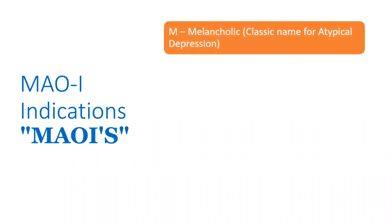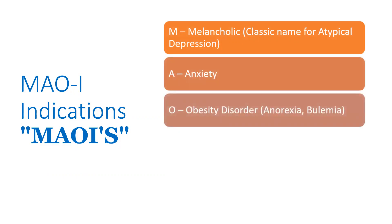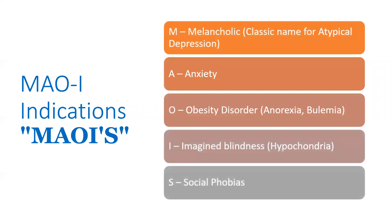MAO inhibitor indications are remembered with the mnemonic MOUSE: M for melancholic depression (atypical depression), O for obesity disorder, U for anorexia or bulimia, S for social phobias, and conditions like anxiety and hypochondria are also included.